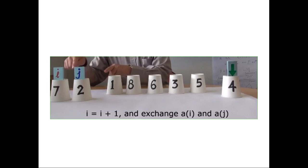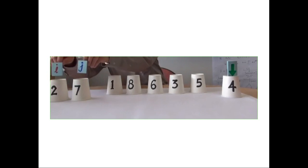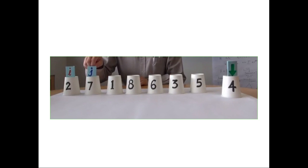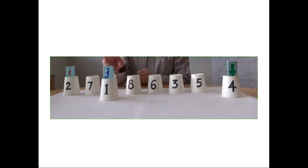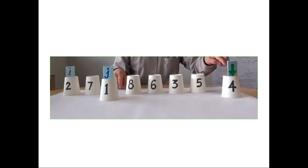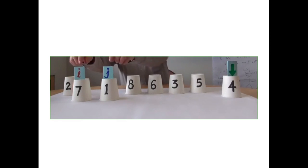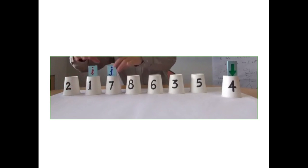Two will be compared with four — it is lesser than four, so i will be incremented to one and then swapped, so two will be placed on the left side and seven will be placed on the right side. Remember, left side always has smaller elements and right side always has bigger elements. J will then be incremented, and one will be compared with four — one is lesser than four.